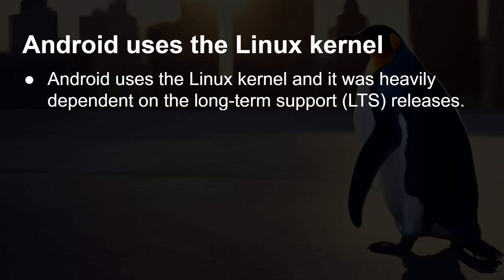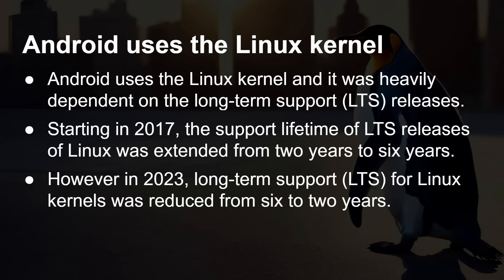Android uses the Linux kernel and is very much dependent on the long-term support releases. In 2017, support for the Linux kernel was moved from two years to six years for its long-term support releases. This was done in conjunction with Google, because it allowed Google to offer security updates for six years for its devices. As people buy smartphones, they don't want to upgrade every year or two — they want to extend the lifetime of their phone. Unfortunately, in 2023 that was reduced from six years back down to two years, because the sheer amount of work to keep that going was too much for kernel.org, the Linux Foundation, and all the people doing that Linux work.